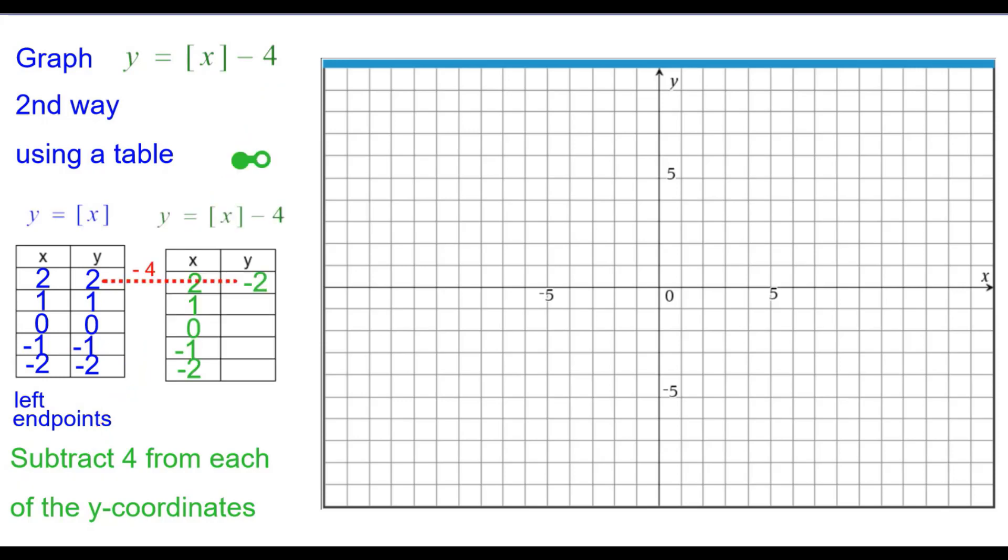So if you look at the first one, 2 minus 4 is negative 2. We'll plot the point (2, negative 2) and make a step from there. 1 minus 4 is negative 3, so (1, negative 3). 0 minus 4 is (0, negative 4).